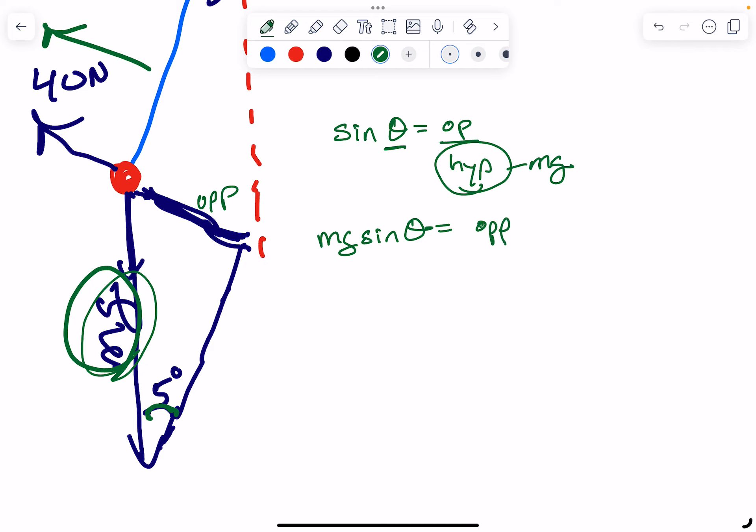So I can say mg sine theta equals the opposite. Okay, but I know everything here except m, right? So I want to find the mass of this object. So that's the first step, is find the mass of this object.